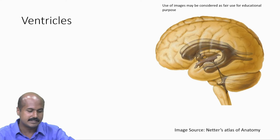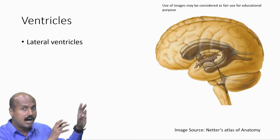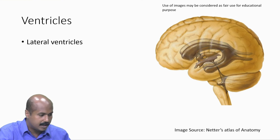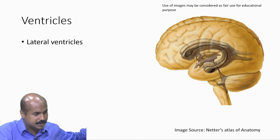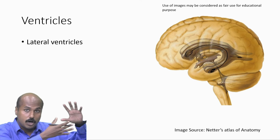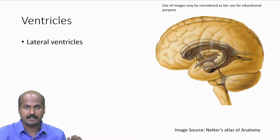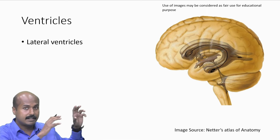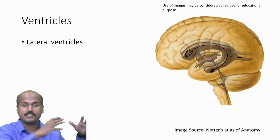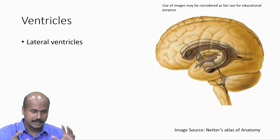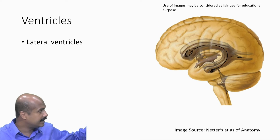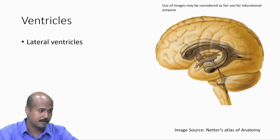Surveying this image, we can see two large C-shaped lateral ventricles with several projections. They are the largest of the ventricles. The lateral ventricles are present in the cerebral hemispheres — and since the cerebral hemispheres are two in number, the lateral ventricles are also two in number, located within the cerebral hemispheres.